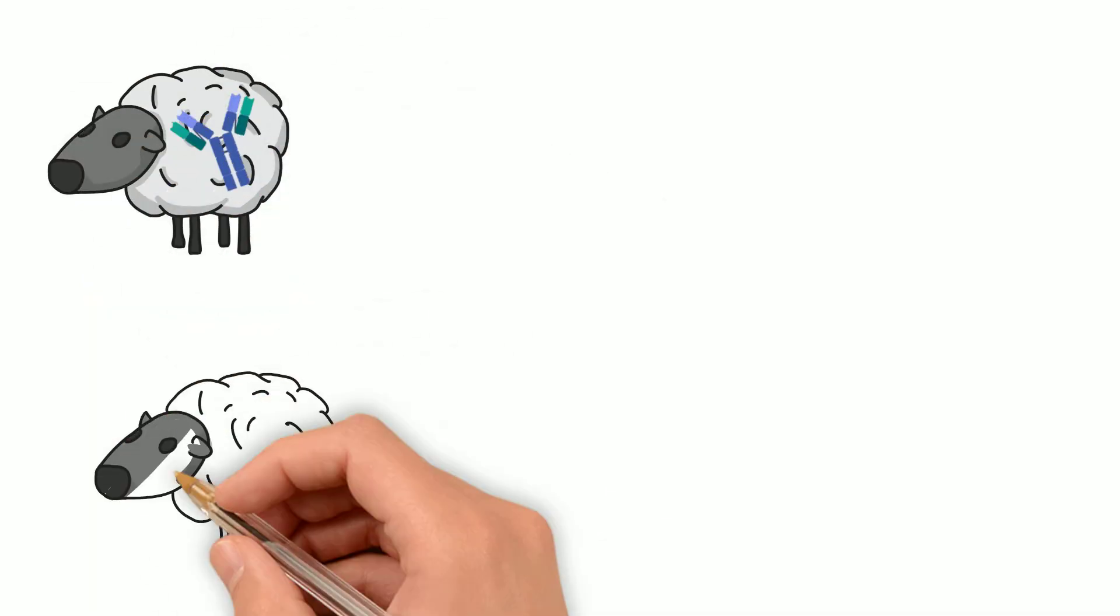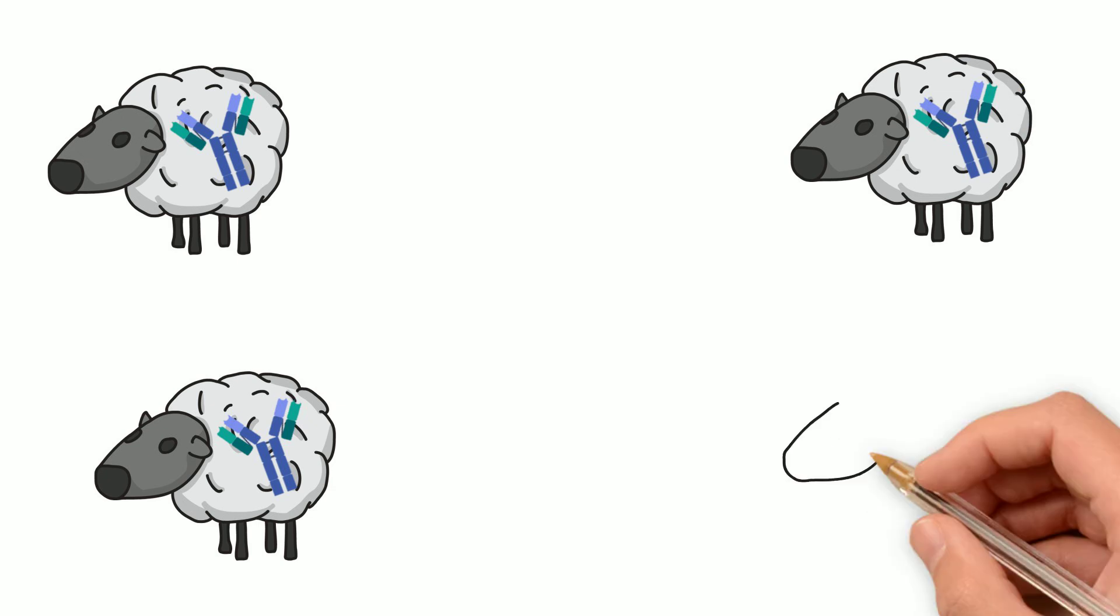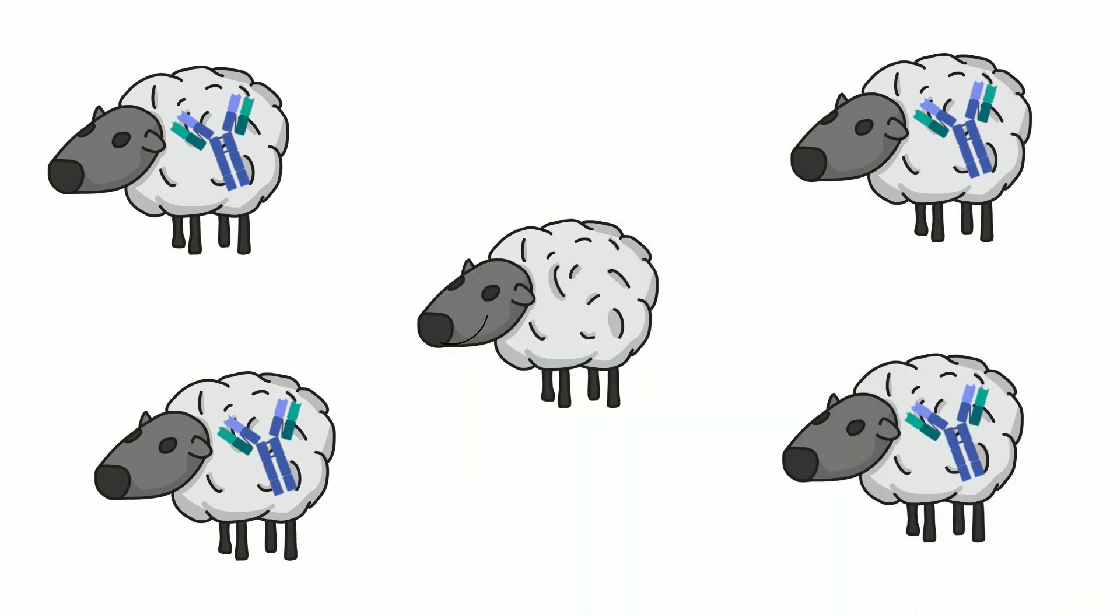These people, who are immunocompromised, rely on other people being vaccinated to stop the spread of deadly diseases. This is called herd immunity.